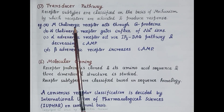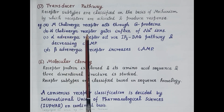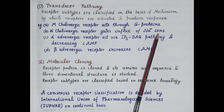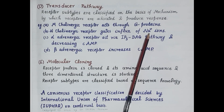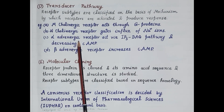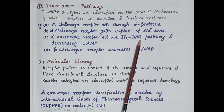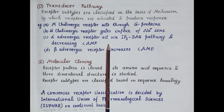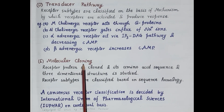For example, muscarinic M-cholinergic receptors act through G proteins. Nicotinic cholinergic receptors gate or increase the influx of sodium ions when acetylcholine binds, which is responsible for contraction of skeletal muscles. Alpha adrenergic receptors produce their action via the inositol triphosphate and diacylglycerol pathway, and also by decreasing cyclic AMP in the cytoplasm. Beta adrenergic receptors produce their response by increasing cyclic AMP in the cells.